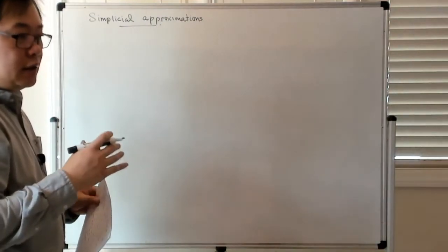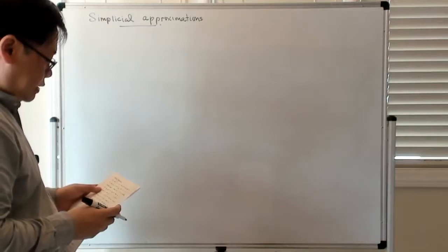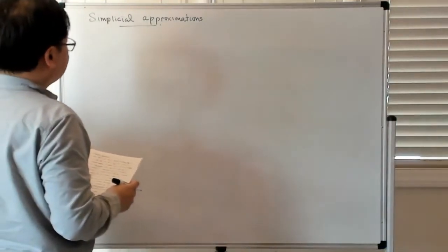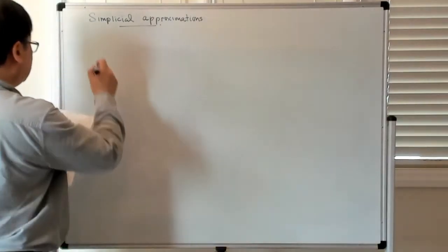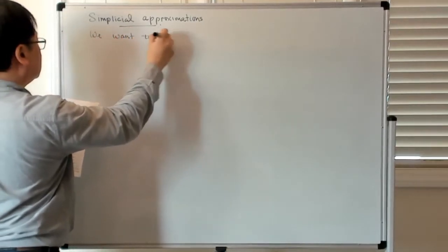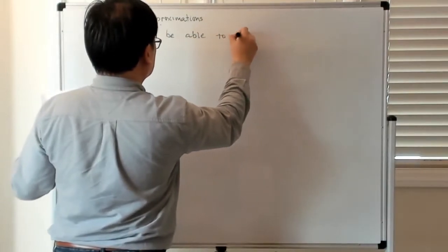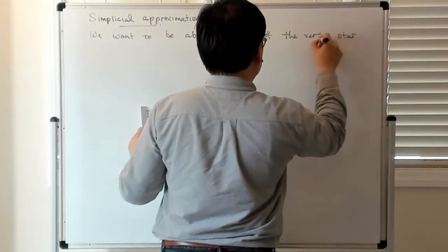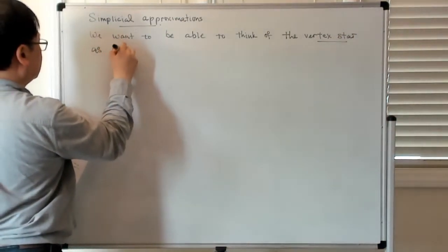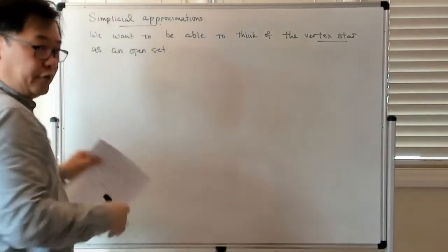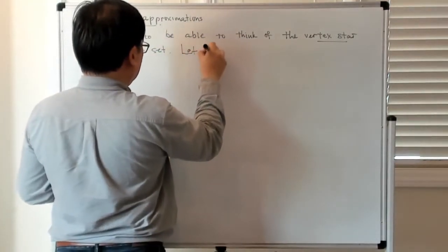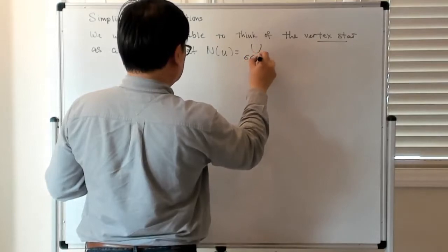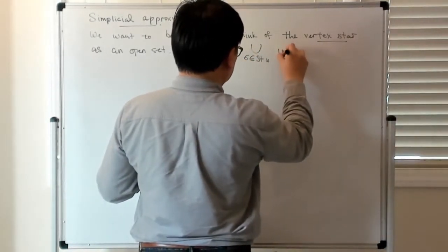The basic idea behind this is that we're going to think of the star of a vertex in a simplicial complex as being something like the neighborhood of that vertex — think of it as an open set. So let N of a vertex u be the union over sigma which is in the star of u, and then take the union of the interiors of sigma.